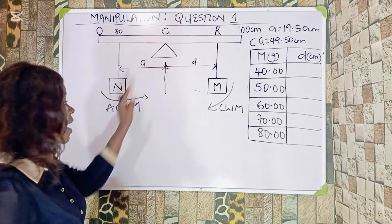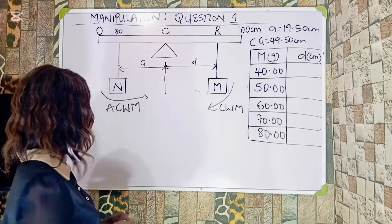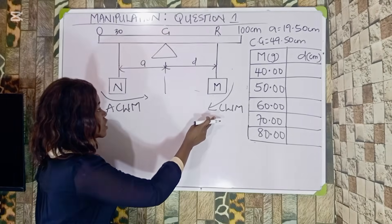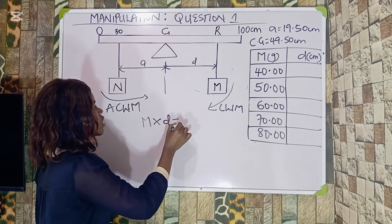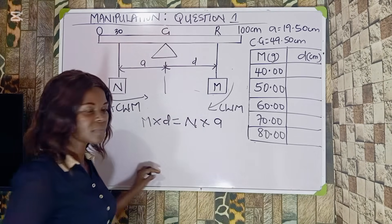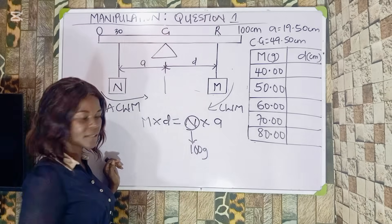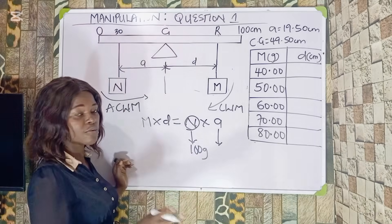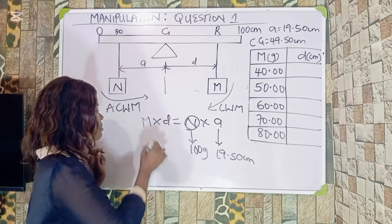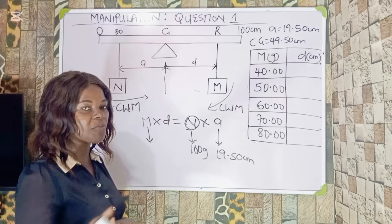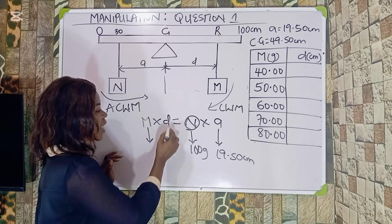Having known this, if this is known and this is known and the mass is already given, we can get the distance. Clockwise moment equals anticlockwise moment. The formula we are going to use is clockwise moment M times D equals N times A. Because we already know our N, which is 100 gram weight mass, and we already know our A, which is what I measured to be 19.50 centimeters, we can actually get this. Because the mass will be given and it will be changing, they are going to be varying the masses.